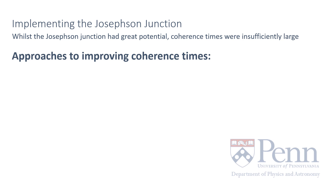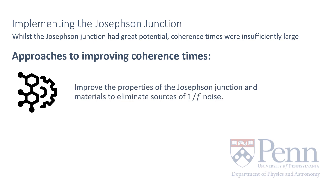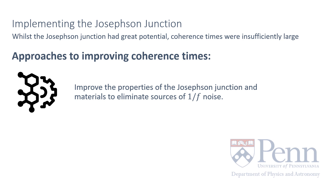So how could we look to tackle this? One approach is to improve the properties of the Josephson junction and materials to eliminate sources of 1/f noise. Another would be to eliminate linear noise sensitivity using sweet spot operations — in essence, just tailoring the quantum circuit to boost performance.